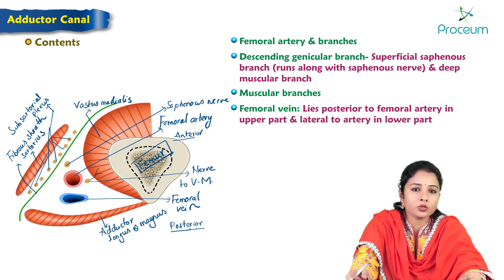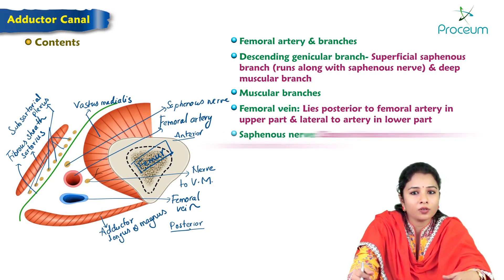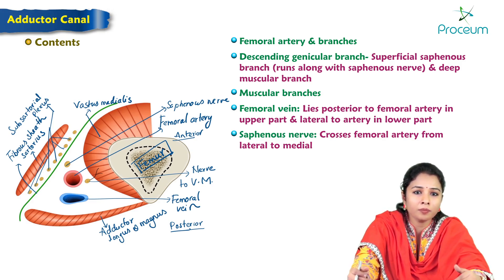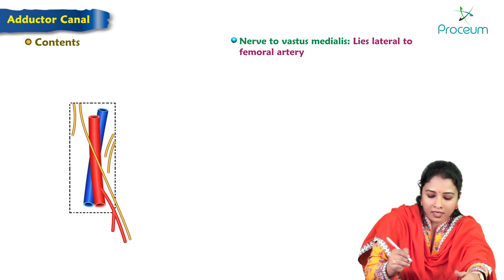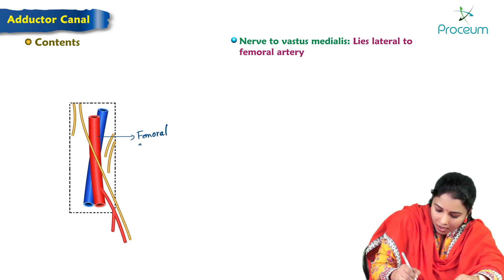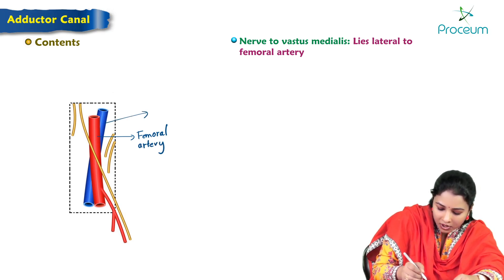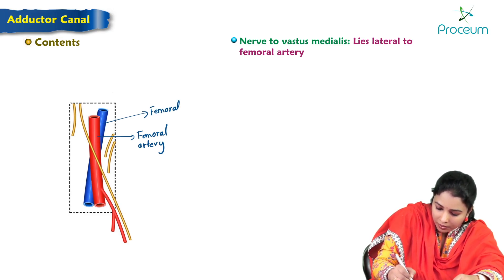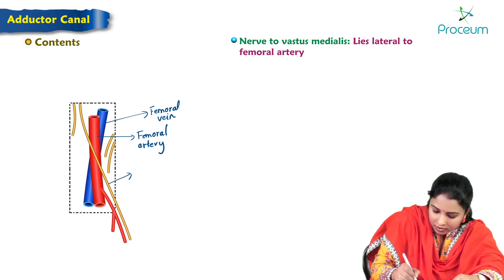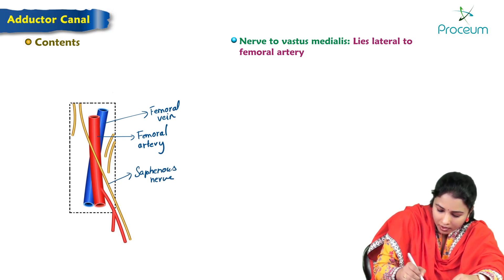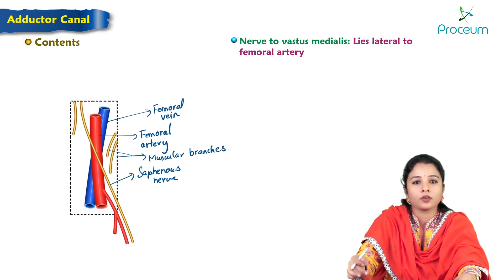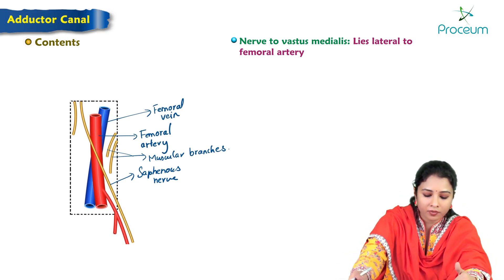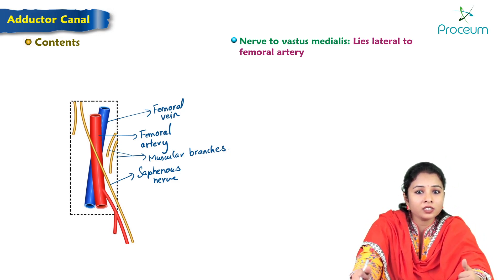The femoral vein lies posterior to the femoral artery in the upper part and becomes lateral to the artery in its lower part. The saphenous nerve crosses the femoral artery from lateral to the medial side. The nerve to vastus medialis lies lateral to the femoral artery and supplies the vastus medialis muscle.